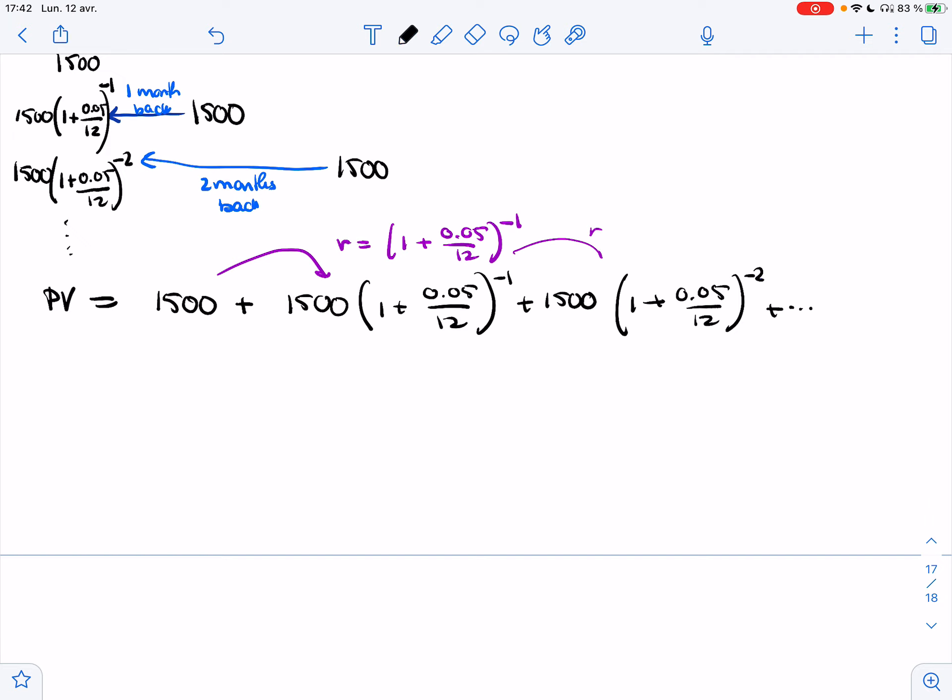And so I have an infinite sum. So I have a series. The series has ratio R, which is this. Let me compute what it is because I need to make sure the series is convergent. So we have 1 + 0.05/12. That's about 1.004. So if I take 1 over that, R, I mean, it's pretty close to 1, but it is less than 1. It is in (-1, 1). So the series is convergent. This geometric series is convergent.